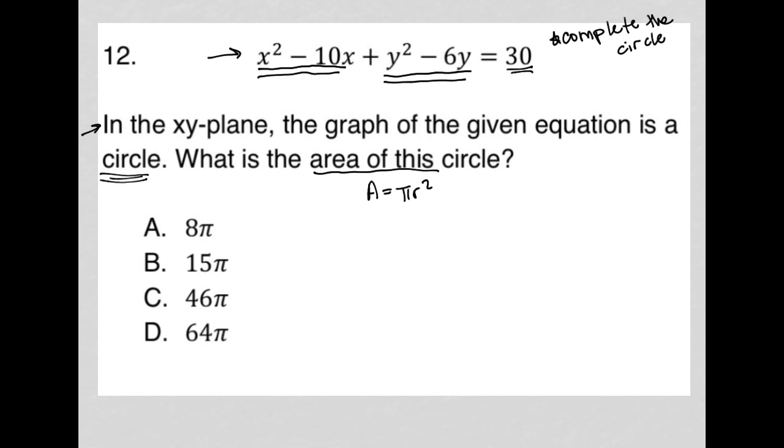Which means I need the radius. So this equation, by completing the square, will be converted into the format of this circle equation, which is (x minus h) squared plus (y minus k) squared equals r squared. R being the most important thing for me to find here because, again, that's how I'd find my area.